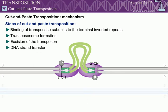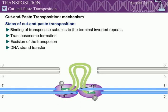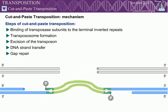The 3' hydroxyls of the transposon DNA then attack the phosphodiester bonds at the target DNA. This reaction is called DNA strand transfer. The sites of attack on the two target strands are usually separated by two to nine nucleotides. This distance is fixed for each type of transposon. The gap in the target DNA resulting from the staggered attack on the two strands is then filled in by cellular DNA repair proteins.